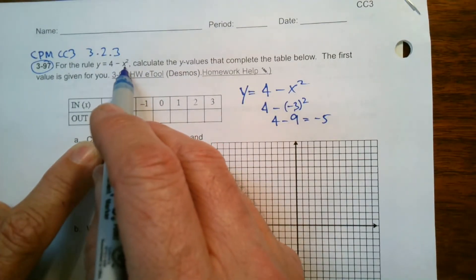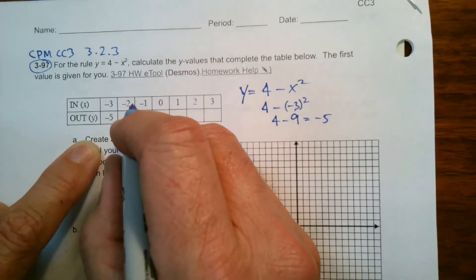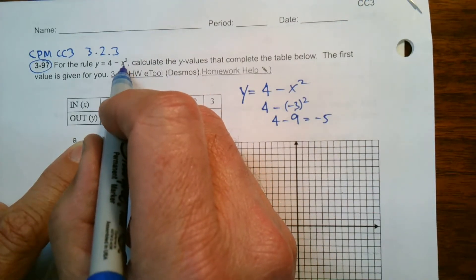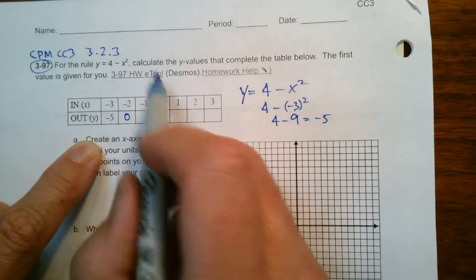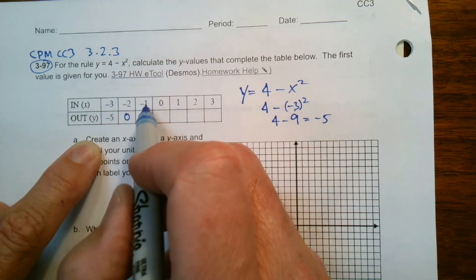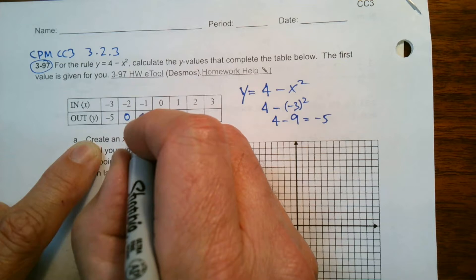So we'll do the same thing here. So again, so now I'm going to put in place a negative two. So negative two squared is positive four. So four minus four is zero. And then negative one, negative one squared, negative one times negative one is positive one. Four minus one is three.